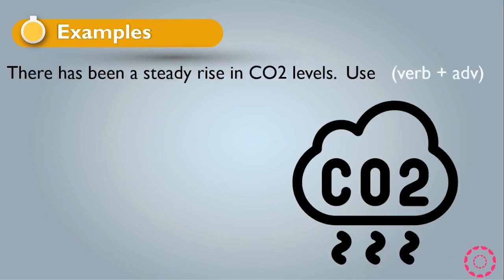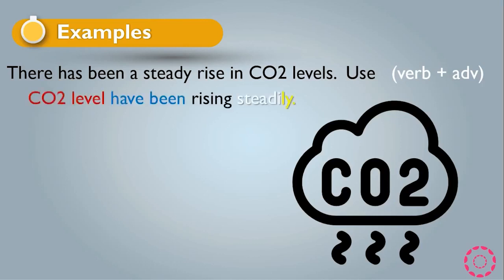Example: 'There has been a steady rise in CO2 level.' If asked to use verb plus adverb, the sentence becomes: 'CO2 levels have been rising steadily.' Notice that 'steady' changes to 'steadily' by adding -ly, converting the adjective to an adverb.